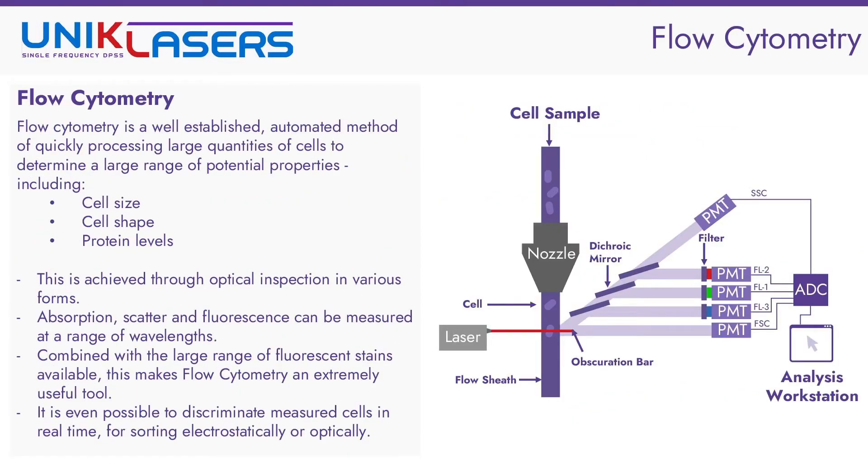Moving on. Flow cytometry is a method which can be used for quickly and autonomously sorting a large population of small items, such as biological cells. This is done by confining the cells to a small volume in a laminar flow and flowing them past a series of detectors and laser sources. From the laser, we can then measure the transmission, scatter, absorption, and fluorescence from the cell, giving a large range of information about it. Combining this with the exceedingly large range of fluorescent dyes and proteins available for measuring different properties of cells, this can provide information about cell health, calcium levels, protein levels, etc.